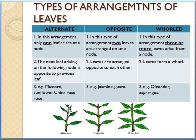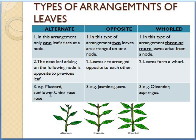As you can see, one leaf is arising at this node, then a second leaf from the second node, and a third leaf from the third node. The next leaf arising on the following node is opposite to the previous leaf — the leaves are arranged opposite to each other in alternate arrangement. Example of alternate arrangement: leaves of mustard, sunflower, china rose, etc.